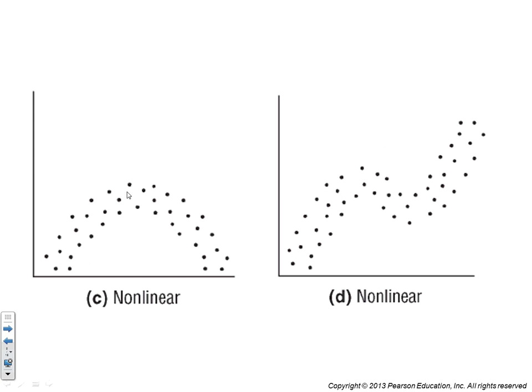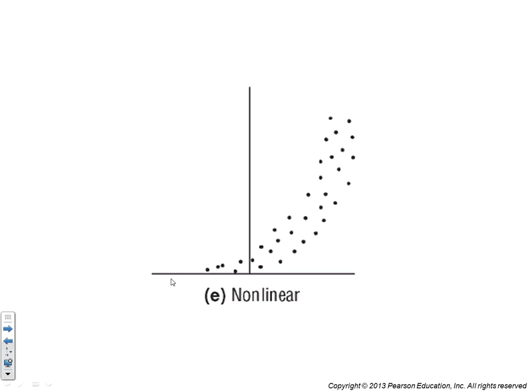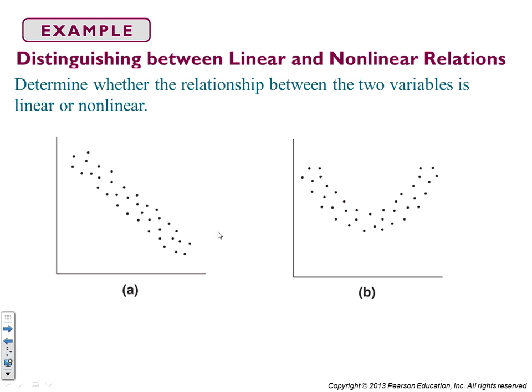Scatter plots that increase and decrease, increase and decrease, are nonlinear scatter plots, or like the population growth kind of looking scatter plot, the exponential. Okay, determine whether the relationship between the two variables is linear or nonlinear. So we look at a and we say that it's consistently decreasing so it gets to be linear. We look at b, it's decreasing here but increasing here, so we say that's nonlinear.